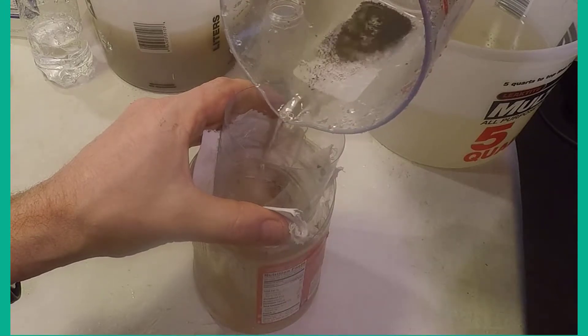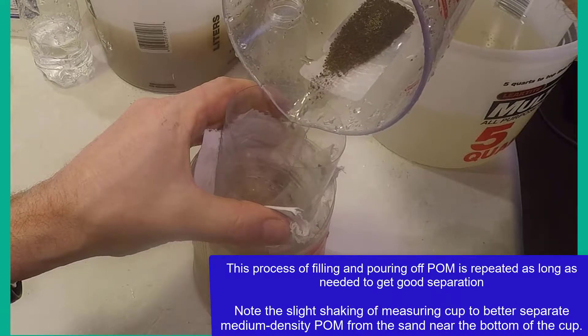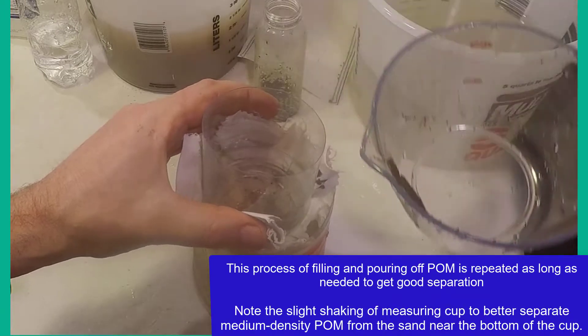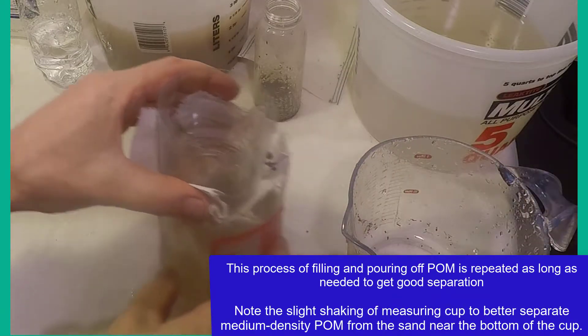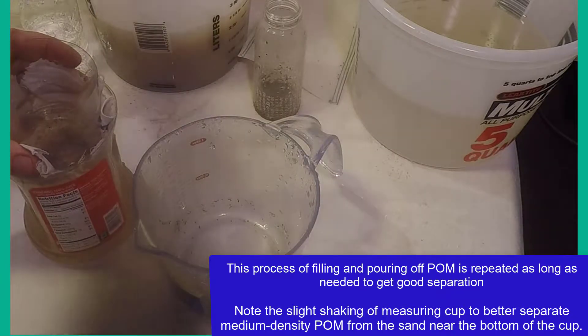Then work to separate the medium density organic matter that is floating just above the mineral material at the bottom of the decanting container. The mineral material will look like sand or small stones.